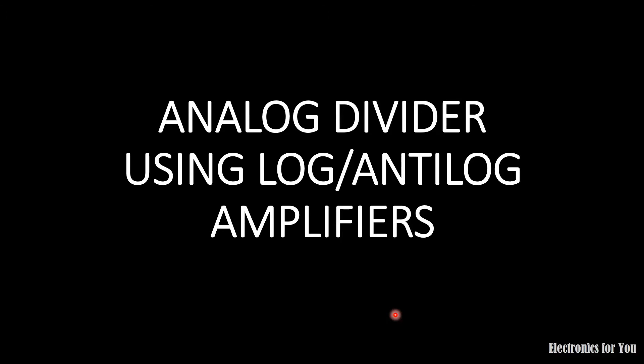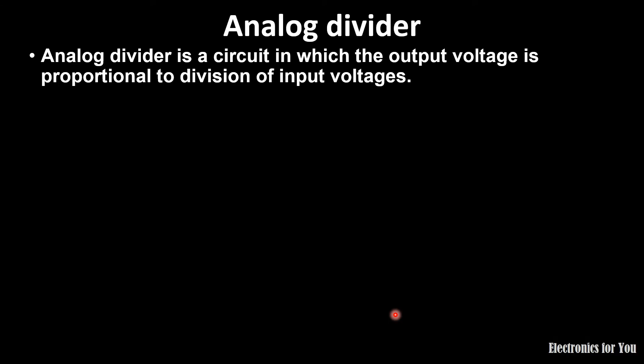Hello friends. In this video we will understand analog divider using log-antilog amplifier. Basically, an analog divider is a circuit in which the output voltage is proportional to the division of input voltages. If we have input voltages V1 and V2, then output voltage V0 will be directly proportional to V1 upon V2 or V2 upon V1.